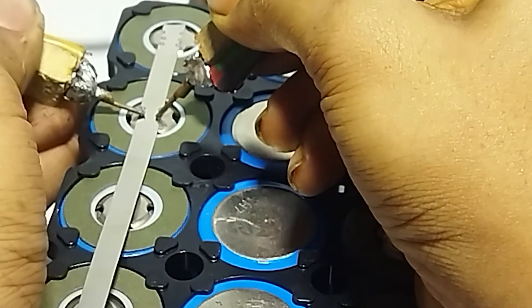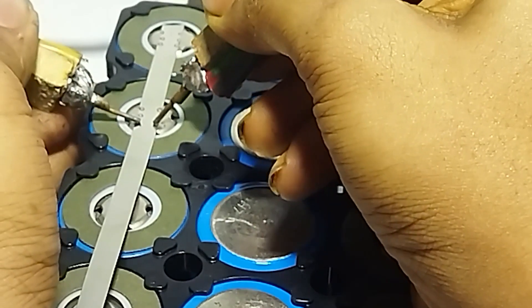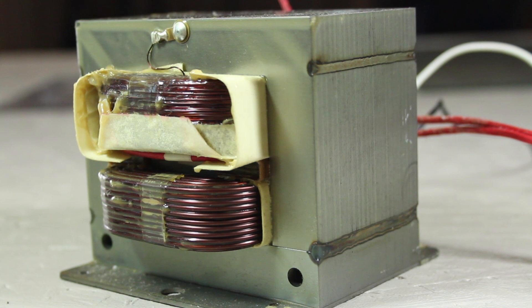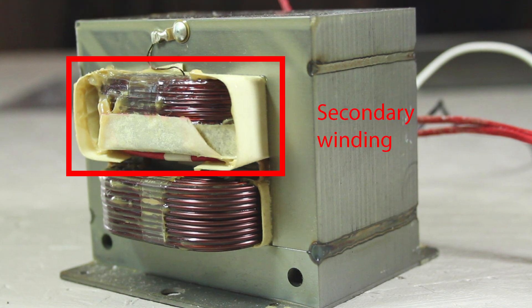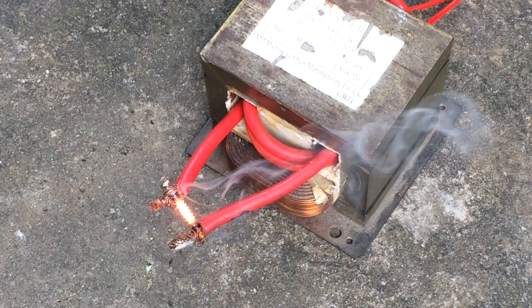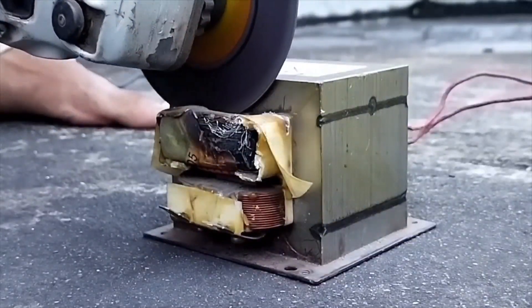Hey guys, today we're gonna make a spot welder using this old microwave oven transformer by rewinding the secondary winding with thicker wire for high current output, so that we can melt metal and fuse them together.